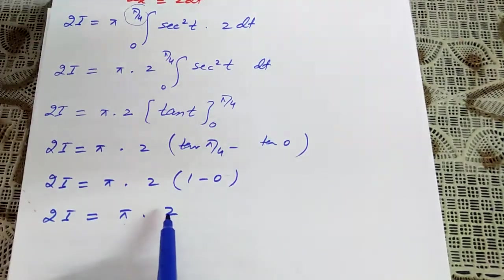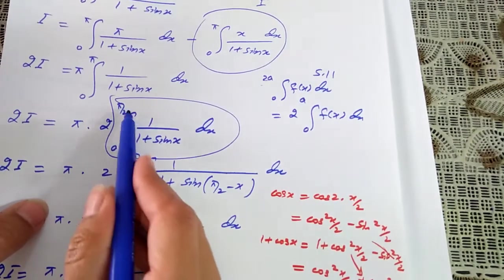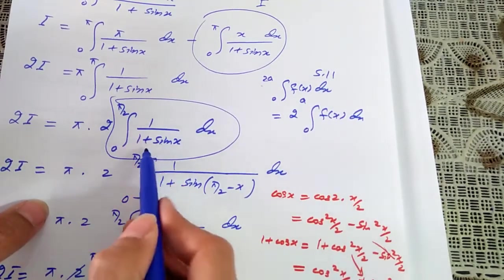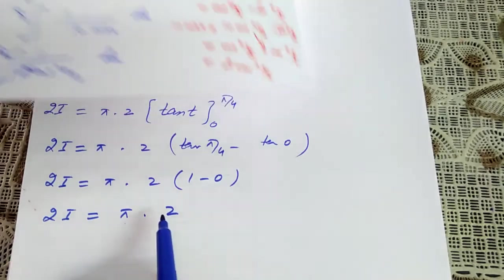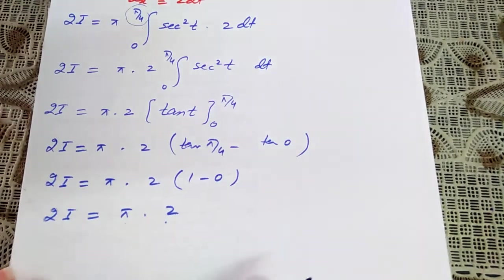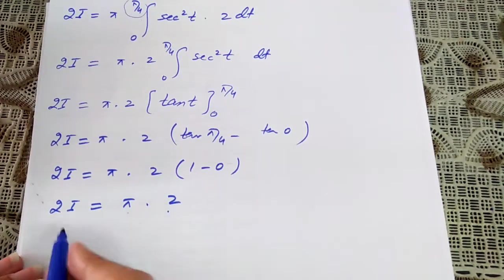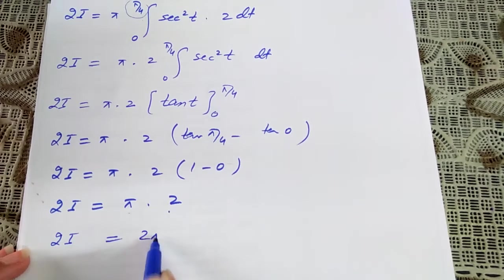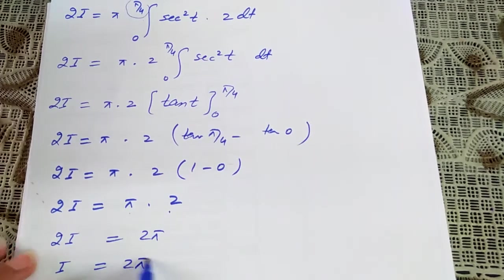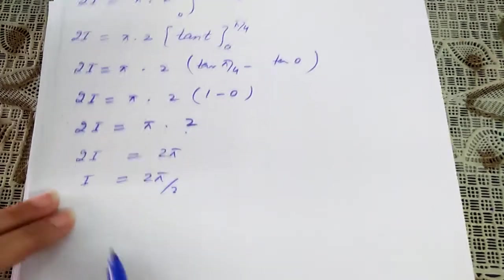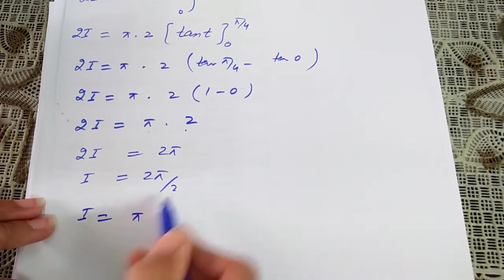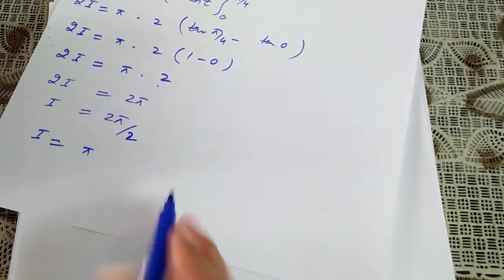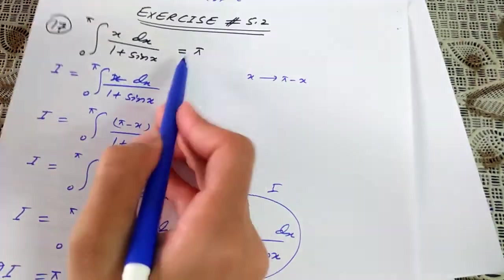Keep in mind: the integral from 0 to π/2 of 1 over 1 plus sin x dx equals 2. Using this, 2i equals 2π, so i equals 2π/2, meaning i equals π. This is exactly what we needed to prove, so question 17 is proved.